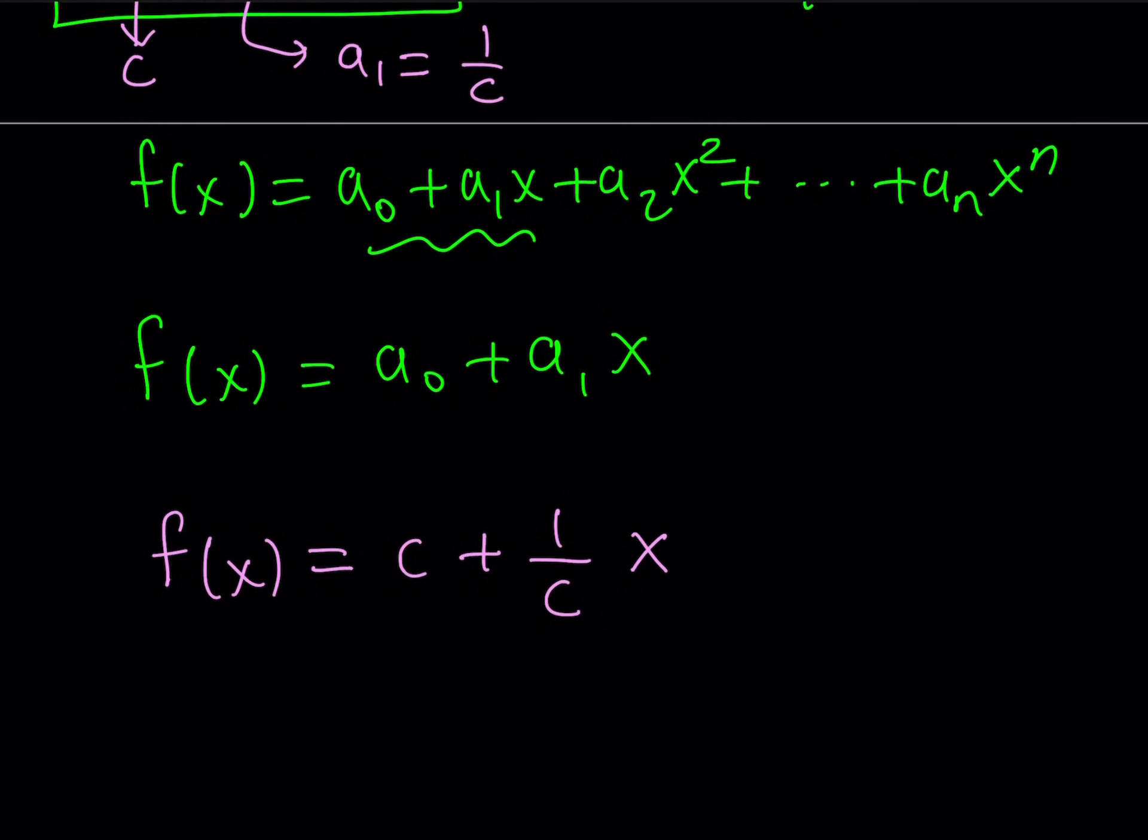So f of x that satisfies this functional equation can be written as c plus 1 over c times x. Obviously, c cannot equal 0, otherwise it's undefined.